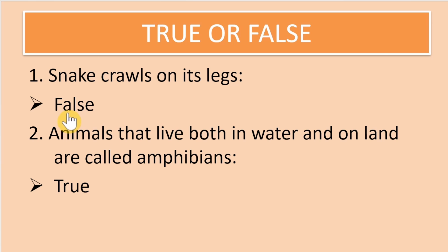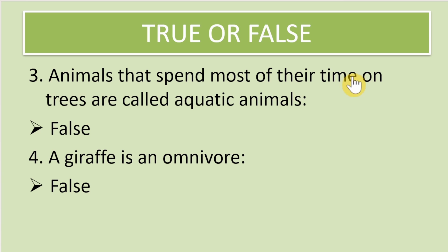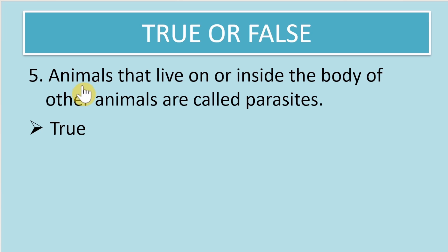Now true or false: snakes crawl on their legs — false. Animals that live both in water and on land are called amphibians — true. Animals that spend most of their time on trees are called aquatic animals — false, they are called arboreal animals. A giraffe is an omnivore — false, it is purely a herbivore. Animals that live on or inside the body of other animals are called parasites — true.